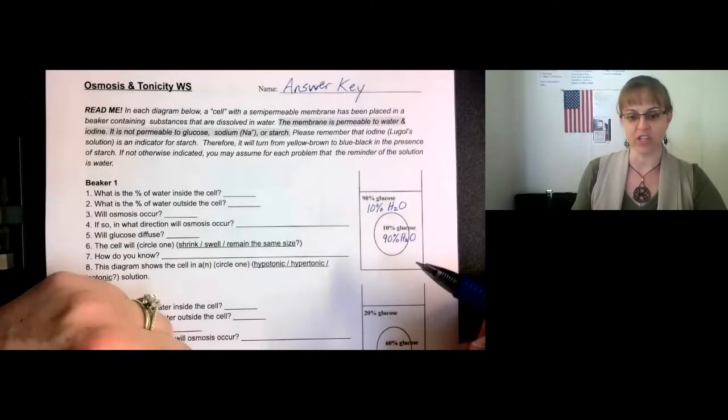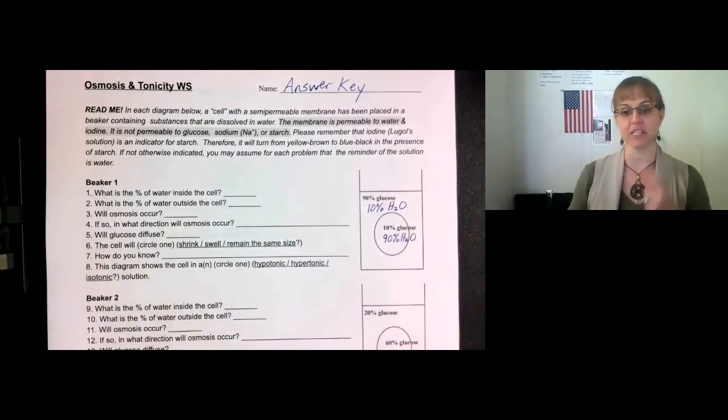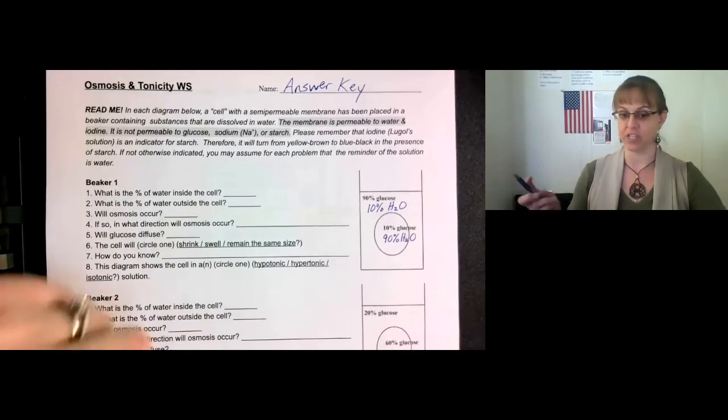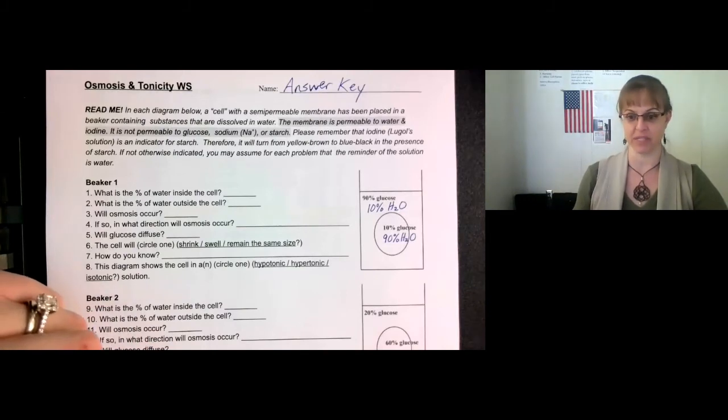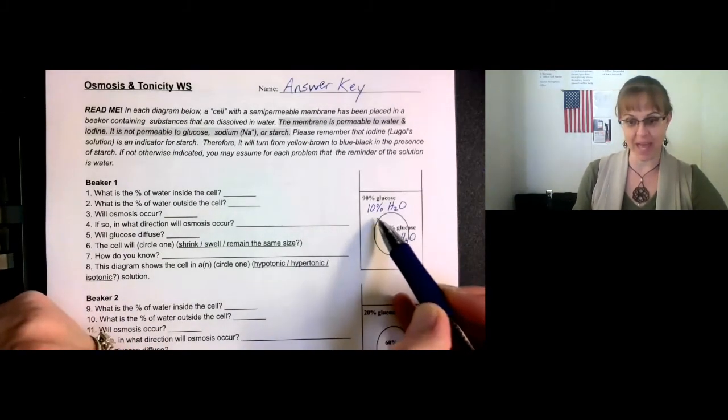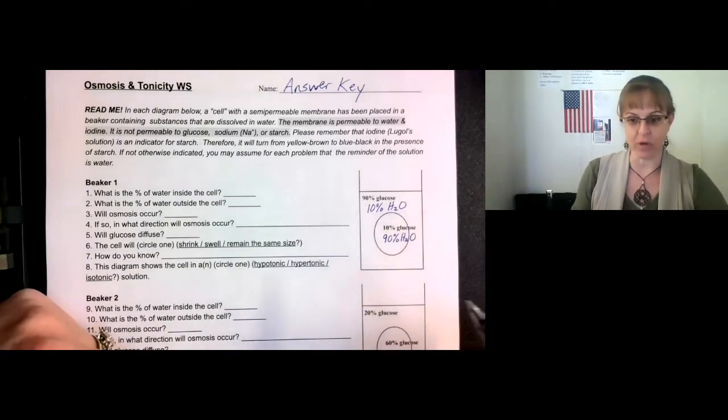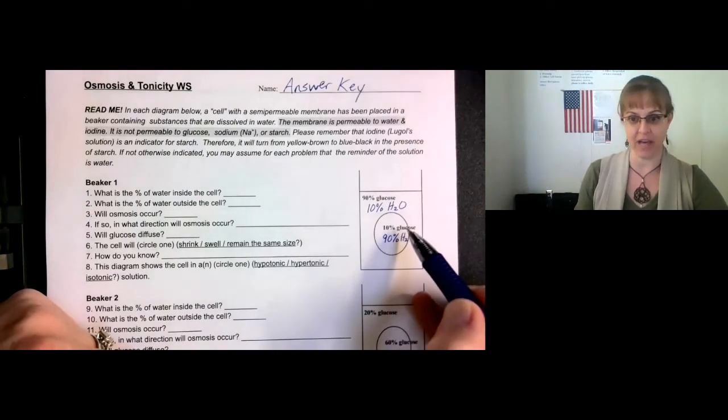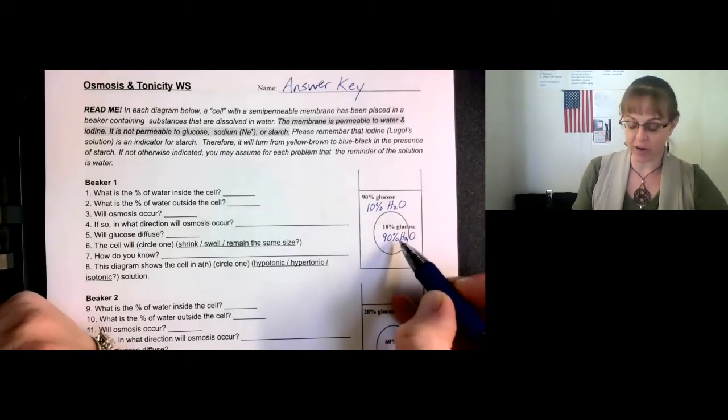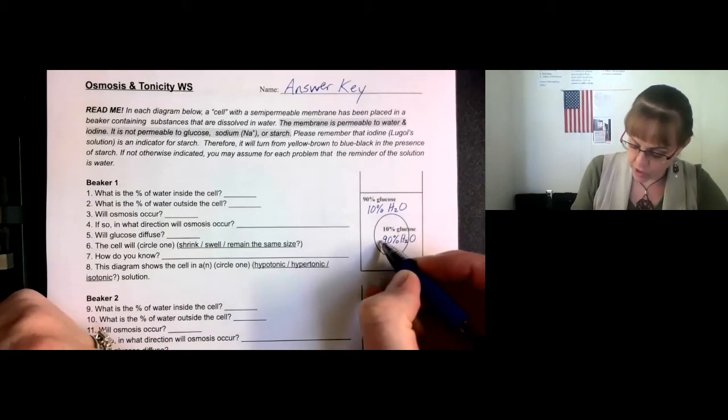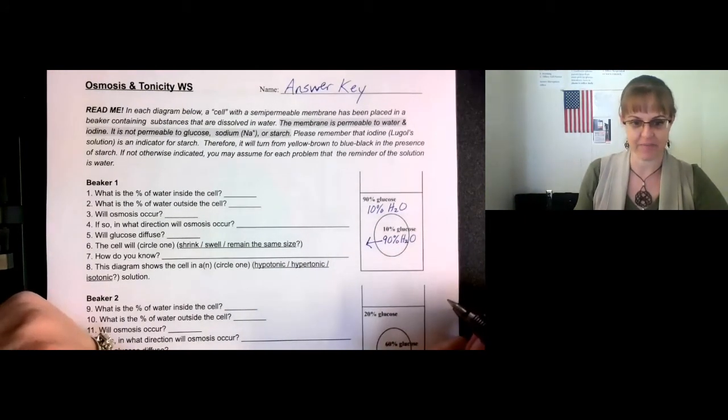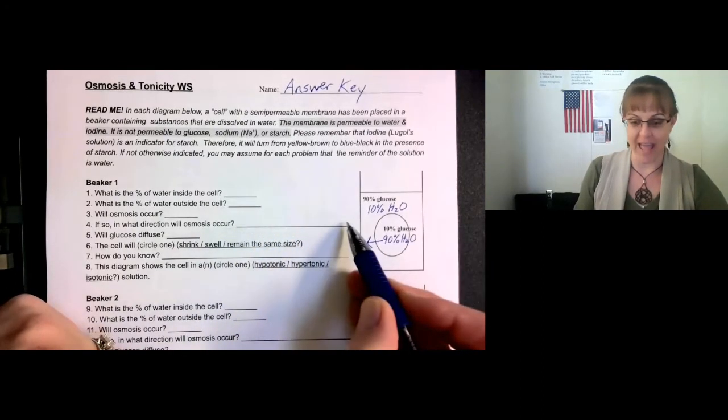In which direction will osmosis occur? Remember, osmosis has to be water diffusing through a membrane, so we only worry about the water when we talk about osmosis. Remember, the glucose cannot pass through the membrane, so it stays where it is. It will move from high concentrations to low concentrations. The water is moving, so we look at the water, not the glucose. The 90% water is higher than the 10%, so the water will move out of the cell. That's what you can write here, out of the cell.